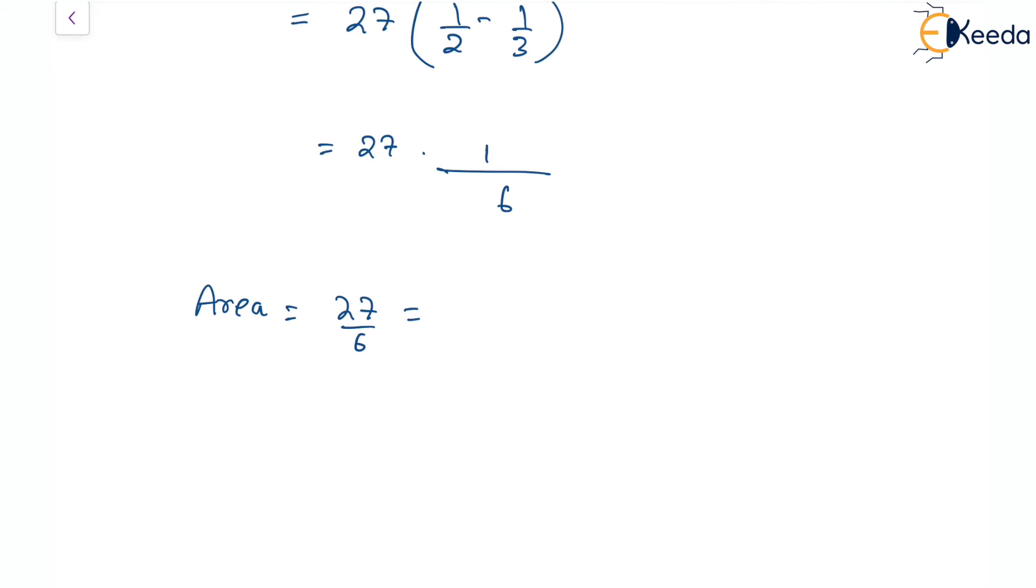Area is 27 upon 6. This could be reduced or simplified further. 3 is a common factor, so this becomes 9/2. If you have to write in decimals, it could be 4.5. For the given region which was enclosed by the given curves, the one was parabola, the other one was straight line, we found the limits, we found the region enclosed and then the double integration gives us the area for that region. That is how we have to solve such questions. I hope it is clear. Thank you.